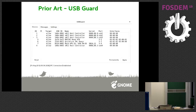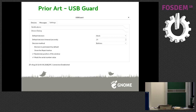This is USBGuard. This is the UI of USBGuard. It lists all the currently plugged-in USB devices and says if they are allowed or blocked in the current state. This is the related settings page of USBGuard, where you can set the default action for new USB devices and the timeout, among other things.